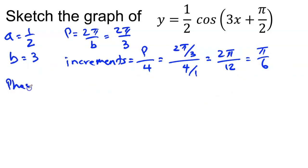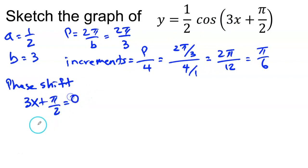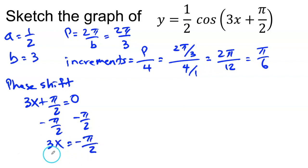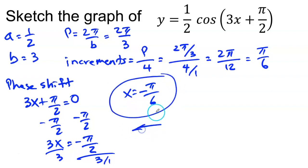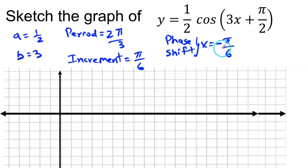For the phase shift, I take whatever's inside the parenthesis — 3x plus π over 2 — and set it equal to 0. Subtracting π over 2 from both sides gives 3x equals negative π over 2. Dividing by 3, x equals negative π over 6. So my phase shift is negative π over 6, which means my graph is going to move to the left by π over 6. My increments are π over 6.